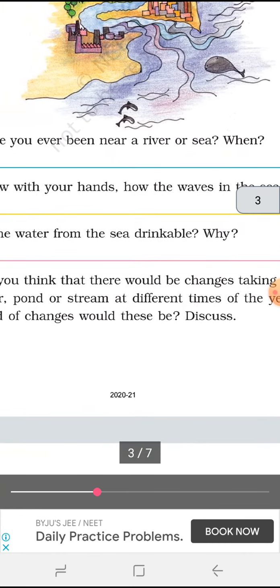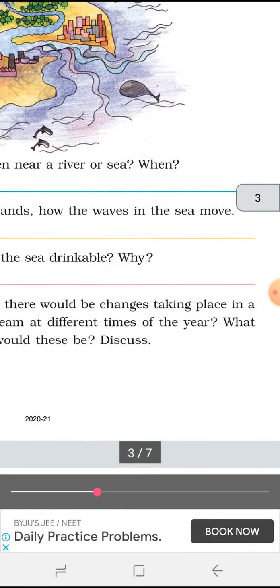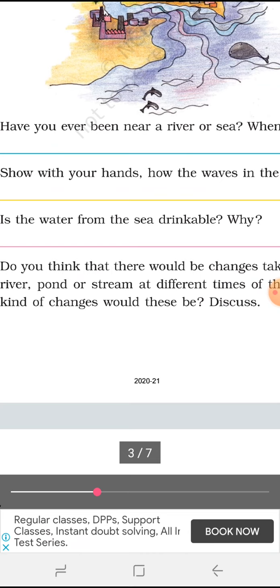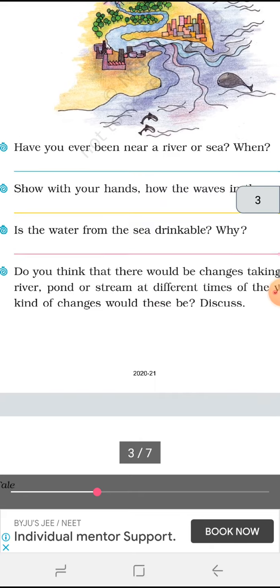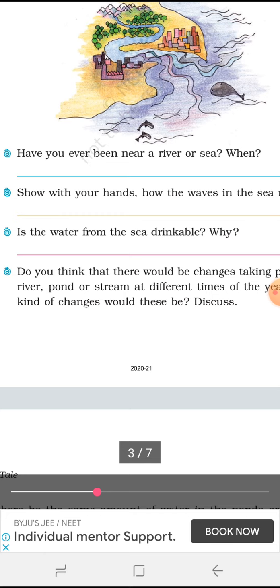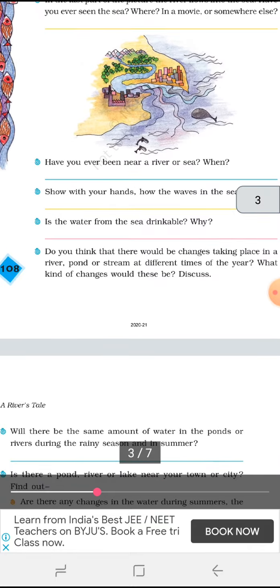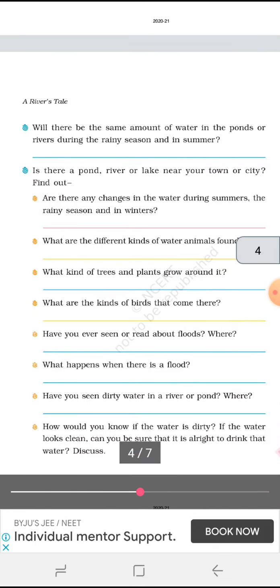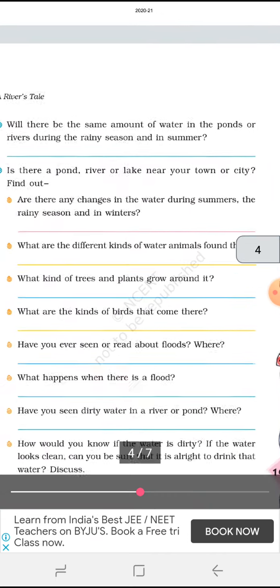Do you think that there would be changes taking place in the river, pond and stream at different times of the year, what kind of changes would these be? Yes, we all can discuss this point that earlier it was not very much polluted, the environment was really very pure because there was not so many vehicles running. By the time we were getting modern, by the time we were having technologies, by the time we were getting the vehicles, the transport system were getting improving day by day. So we are having the diesel, the petrol, the smoke is there in the environment. The industries are taking place and the drainage water is coming inside the river, pond and everywhere. They are harming the water bodies.